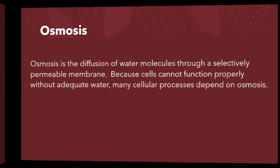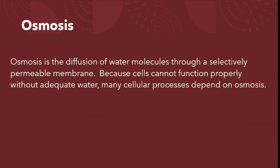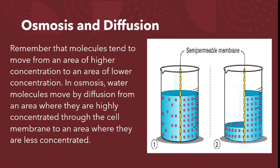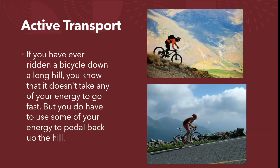Osmosis is the diffusion of water molecules through a selectively permeable membrane. Because cells cannot function properly without adequate water, many cellular processes depend on osmosis. Remember that molecules tend to move from an area of higher concentration to an area of lower concentration. In osmosis, water molecules move by diffusion from an area where they are highly concentrated, through the cell membrane, to an area where they are less concentrated.